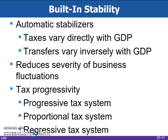The size of automatic stability depends on the responsiveness of changes in taxes to changes in GDP. The more progressive the tax system, the greater the economy's built-in stability. A progressive tax system means the average tax rate rises with GDP. A proportional tax system means the average tax rate remains constant as GDP rises. And a regressive tax system means that the average tax rate falls as GDP rises.